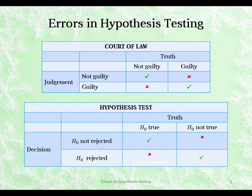These errors have special names. A type 1 error is when the null is true but we've rejected it. A type 2 error is when the null is not true — in other words, a value under the alternative is correct — but we have not rejected the null. Obviously, we would want to minimize the risk of making these errors as much as possible.